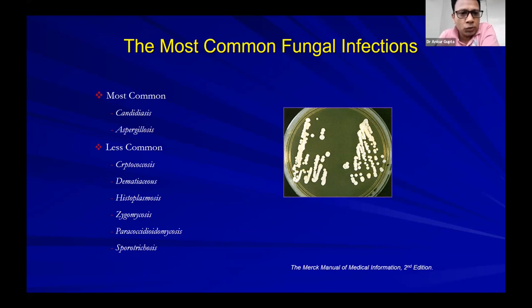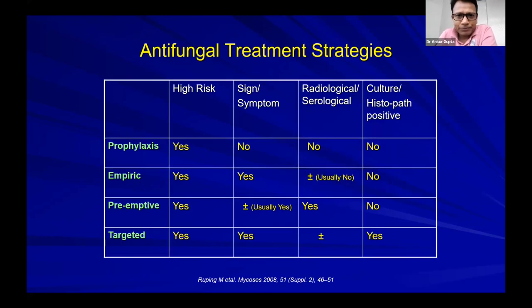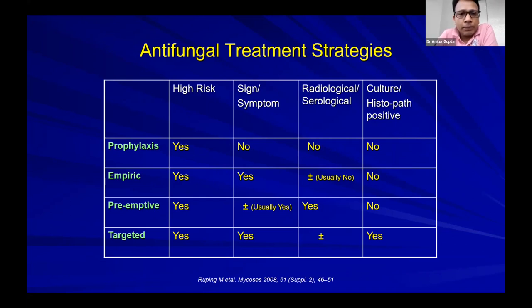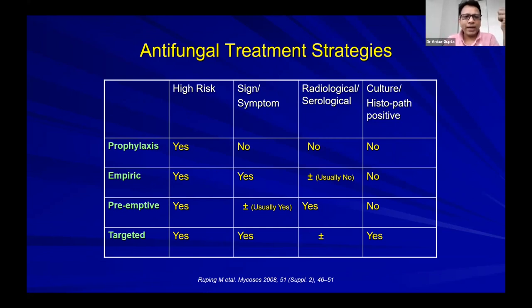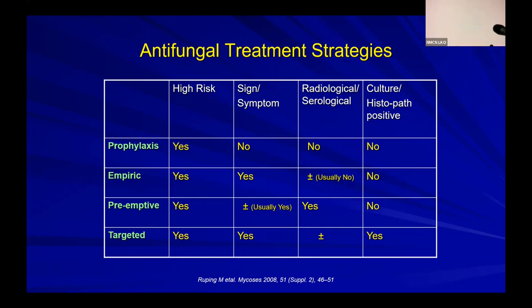To summarize, the most common fungi are Candida, Aspergillus, Cryptococcus in HIV patients, and zygomycetes. Antifungal treatment strategies can be divided into a two-by-two table with four paradigms: prophylactic, empiric, preemptive, and targeted — plotted against axes of high risk, signs/symptoms, radiological or serological evidence, and culture.